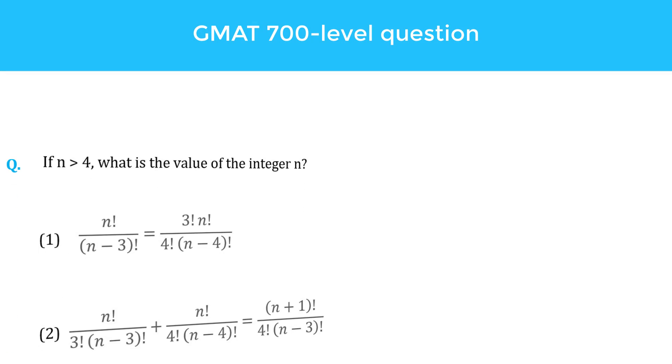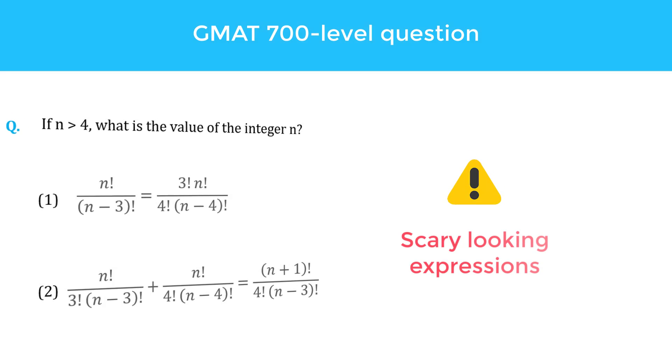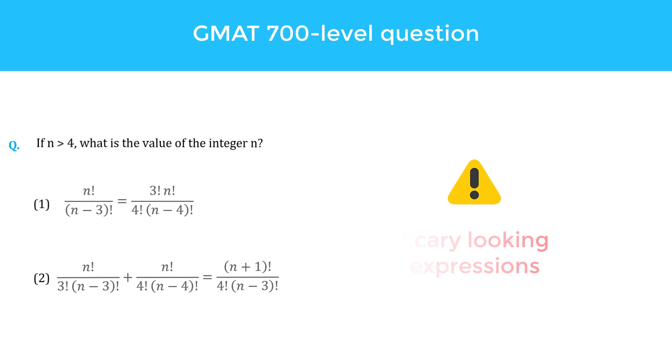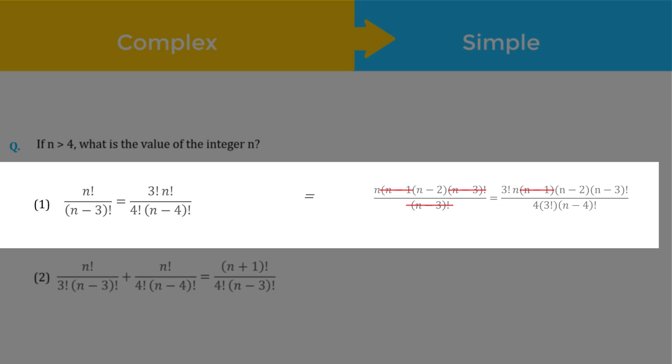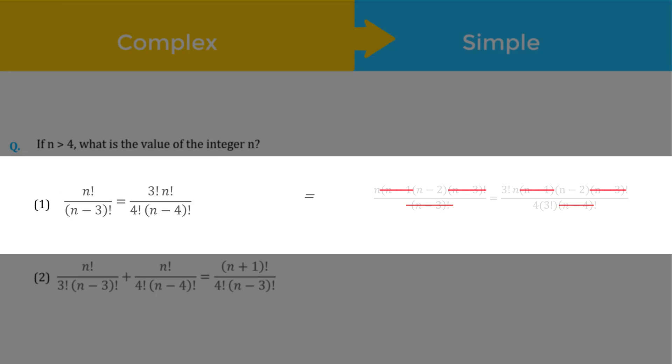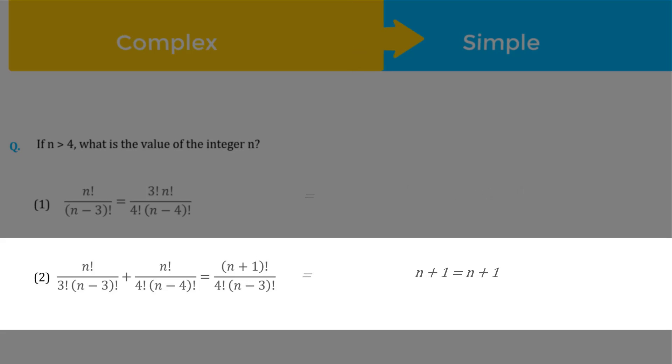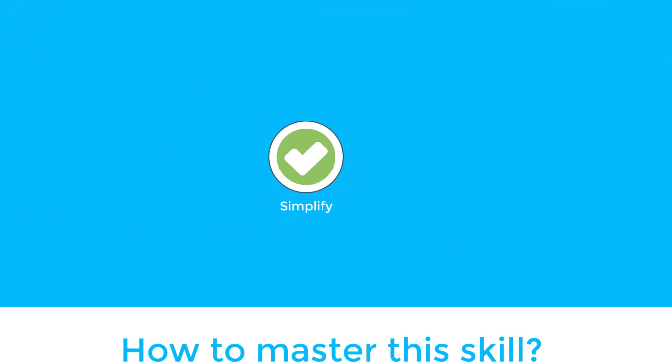Often, 700 level questions on the GMAT contain some scary looking expressions. The key to solving them is to convert those complex expressions into simpler forms. For example, simplifying this complex expression or this one. In this short video, I am going to show you how to master this skill.